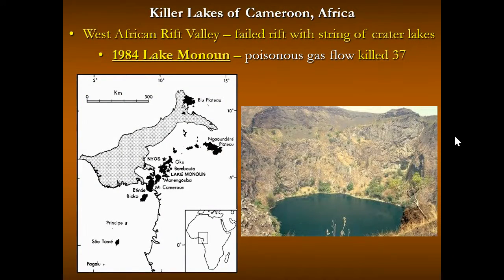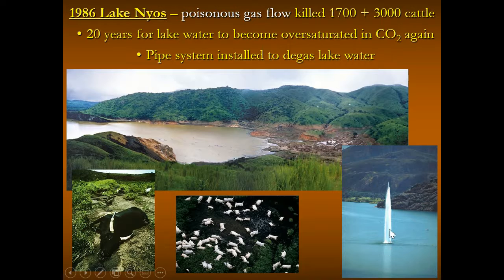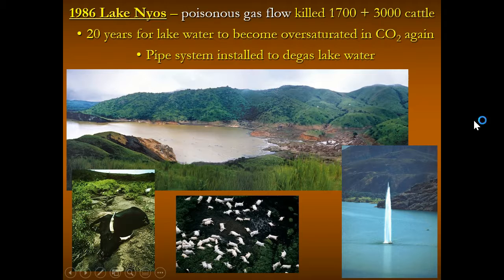There are crater lakes in the west part of Africa called the killer lakes of Cameroon, where active magma near the surface fills lake bottoms with CO2. In 1984, a poisonous gas flow killed 37 people from Lake Monoun. Just two years later, Lake Nyos also overturned releasing CO2, killing 1,700 people and 3,000 cattle. They've installed pipes toward the bottom of the lake to slowly degas the water over time under pressure rather than in one big event.